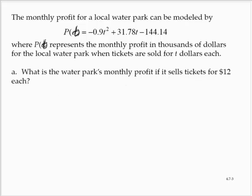Alright, so if they sell the tickets for $12 each, then t is equal to 12. Then P of 12, the profit when they sell tickets for $12 would be given by -0.9(12)² + 31.78(12) - 144.14.